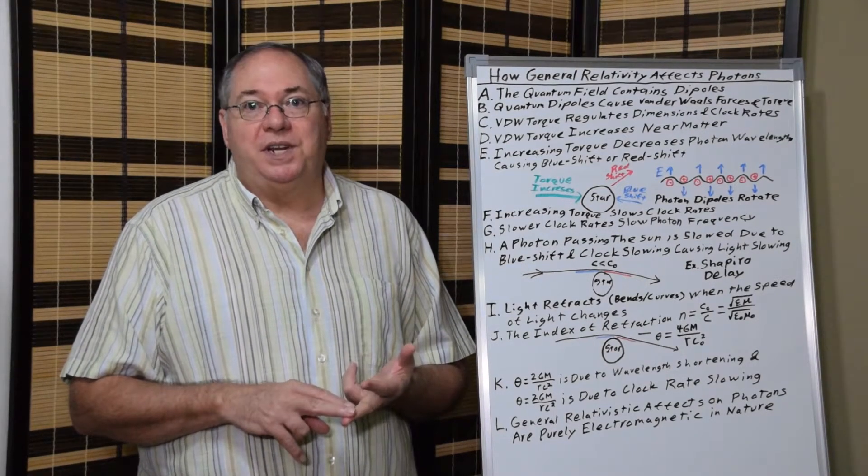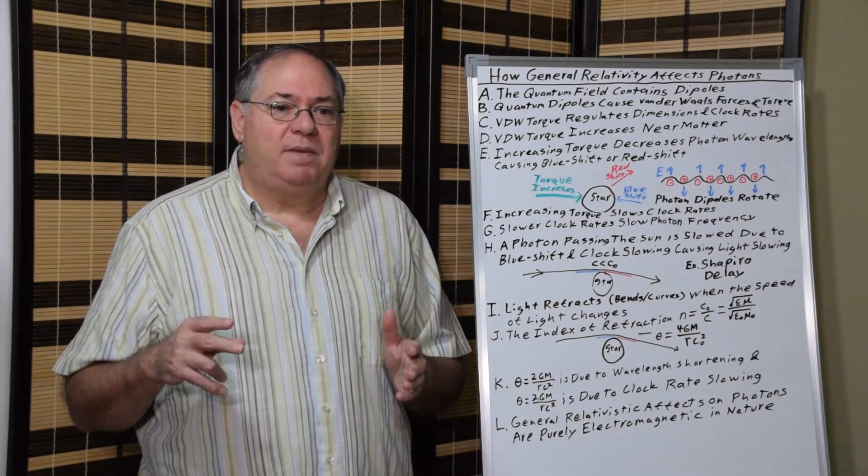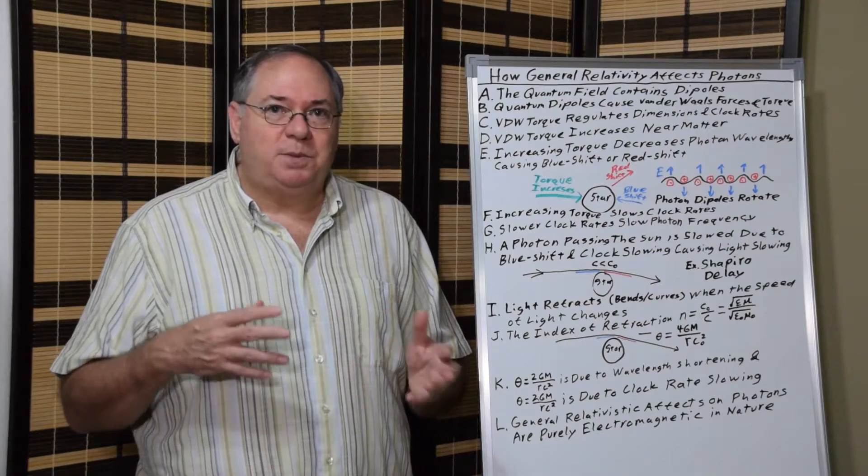And half is due to the change in clock rate or change in frequency. So 2GM over rc squared for both of those. So we have a case that's purely electromagnetic.